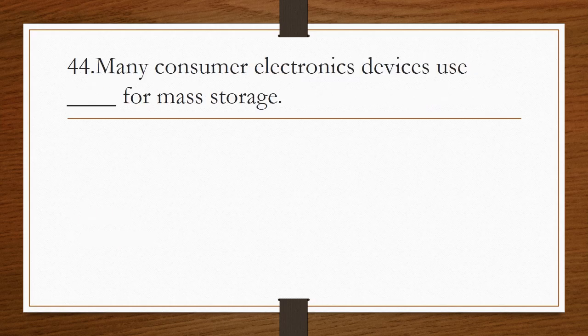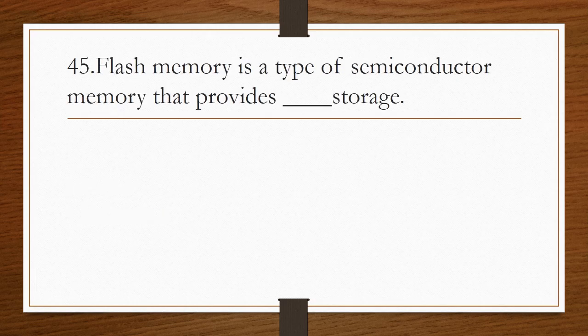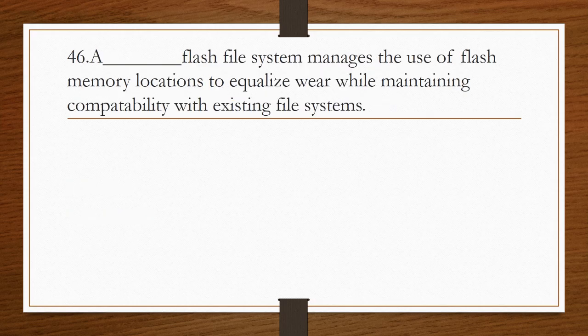Many consumer electronic devices use blank for mass storage. Answer is flash memory. Flash memory is a type of semiconductor memory that provides blank storage. Answer is permanent storage. A blank flash file system manages the use of flash memory locations to equalize wear while maintaining compatibility with existing file systems. Answer is wear leveling flash file systems.